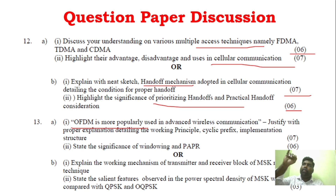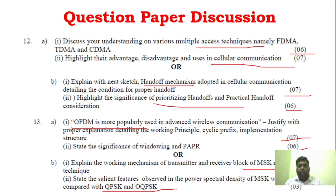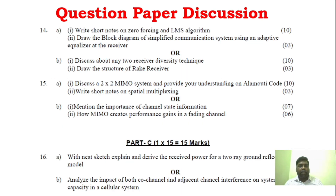You can see OFDM — cyclic prefix, windowing and PAPR. Also MSK, QPSK and OQPSK. This is 3 marks and 10 marks respectively. For the third unit, just 3 questions — more than enough. Question 14 covers zero forcing and LMS algorithm — one is 10 marks. Two algorithms combined is most 8 marks, making it a very simple question.